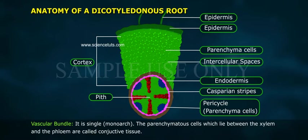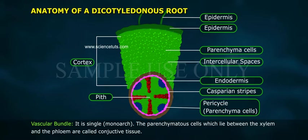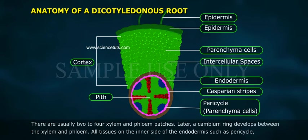The parenchymatous cells which lie between the xylem and the phloem are called conjunctive tissue. There are usually two to four xylem and phloem patches.